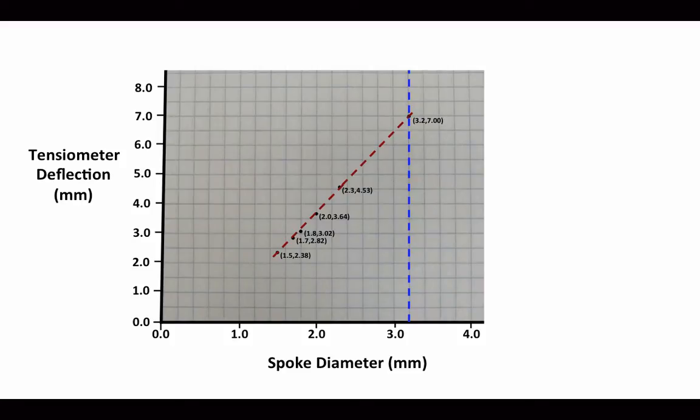Now even if I think my line isn't perfectly linear and actually slopes up slightly, I still get a range on my tensiometer of between 7 and 7.5 millimeters of deflection representing 120 kilograms of force on the motorcycle spokes.